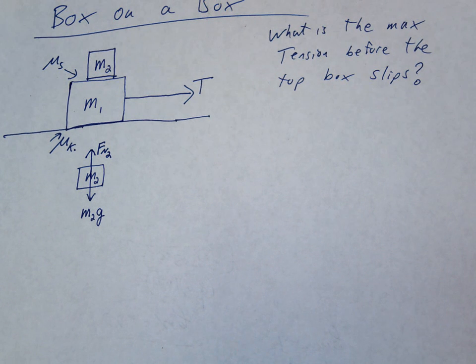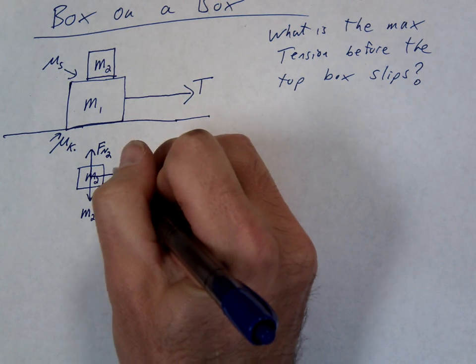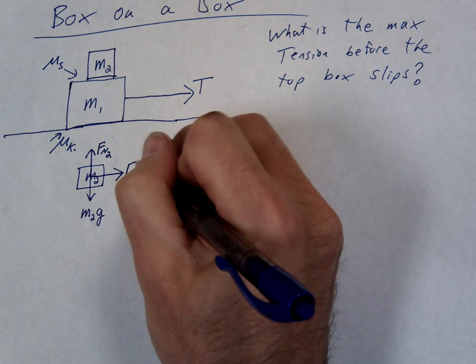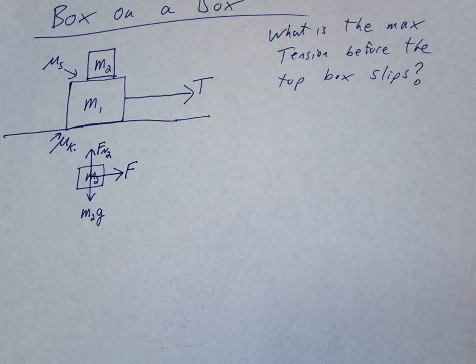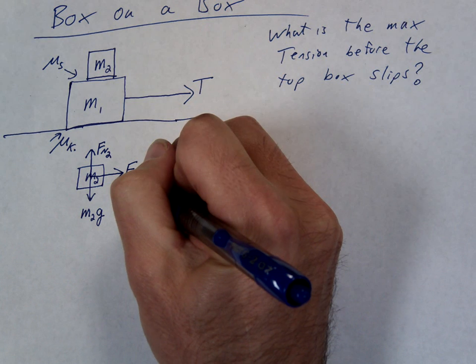Anything else? Friction. What direction is friction? To the right. Just like in the truck problem we did. Is this a static or kinetic friction? Static. So we'll call this F-friction static.